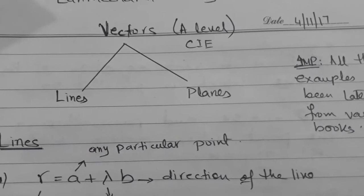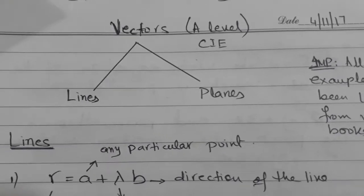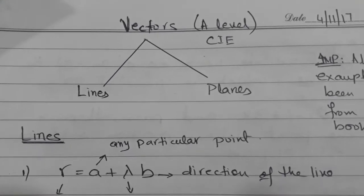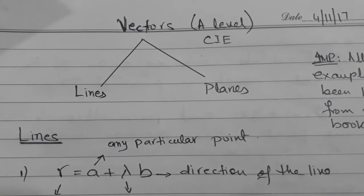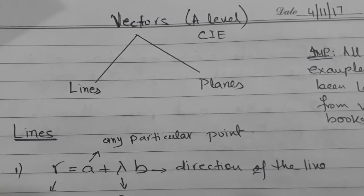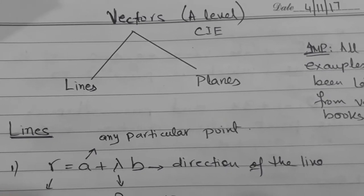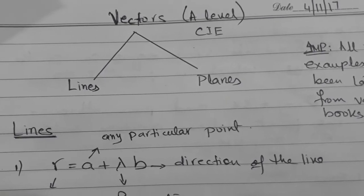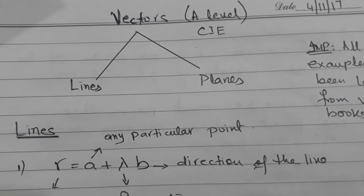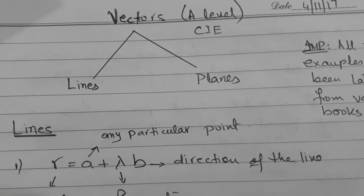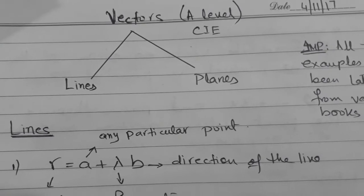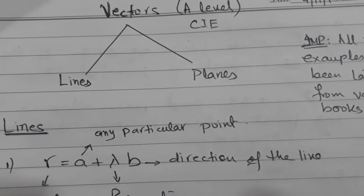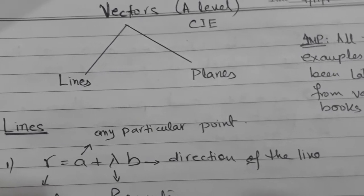Hello, dear students. In the previous lesson, we studied a few concepts of the vector equation of the line, and this is part 2 in continuation of that topic. In the last video, we studied the concept of parallel lines, intersecting lines, and various forms of the equation of the line — vector, parametric, and Cartesian. Today we will start from skew lines.